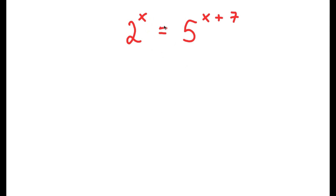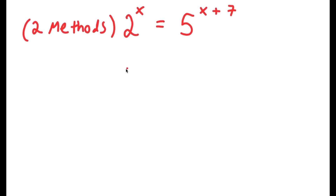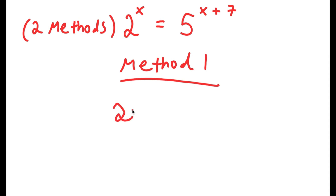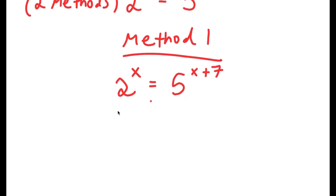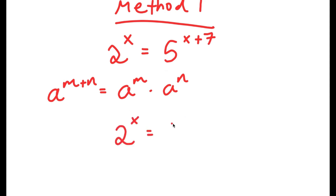In this problem, I have 2 to the power of x is equal to 5 to the power of x plus 7. I have two methods to solve this problem. For method 1, I'll write the equation: 2 to the power of x equals 5 to the power of x plus 7. Using the property that a to the power of m plus n equals a to the power of m times a to the power of n, I can write 5 to the power of x plus 7 as 5 to the power of x times 5 to the power of 7.